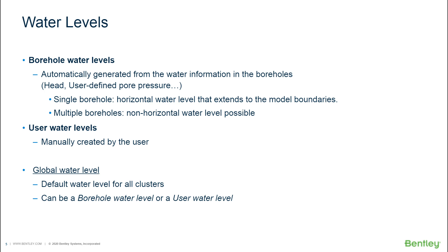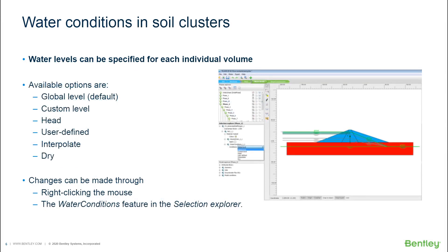To assign water conditions, in the flow conditions mode — here shown for a large dam construction — you select a certain area, which turns red. You can then go to the water conditions option in the selection explorer and use the drop-down box, or right-click on the red area in the graphical view for a list of options. You can assign the global level, a custom level by picking from your defined water levels, or specify a direct head value — for instance, a head of plus 10 meters — without picking a named water level.